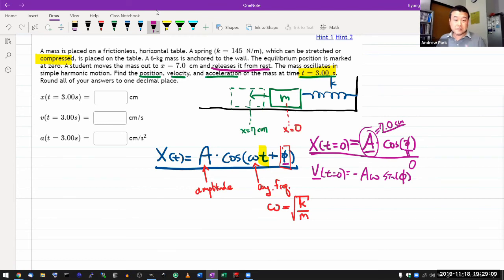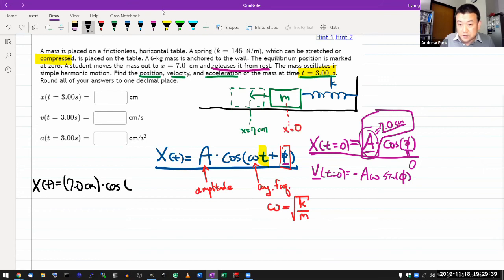This question is easier because it gave you initial condition where initial velocity is zero, so we had this easy result. I have numerical values for everything. With all this, x as a function of time is equal to 7.0 centimeters times cosine of square root of k over m times time. Phi is zero, so I don't need to write plus phi. That's it for position. To answer the first question, you simply plug in t equals 3.